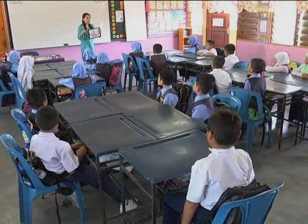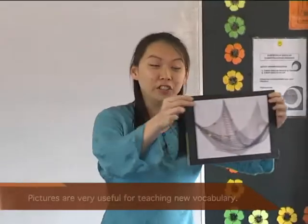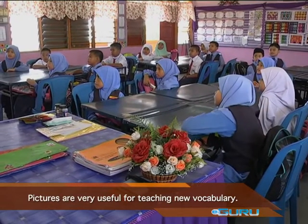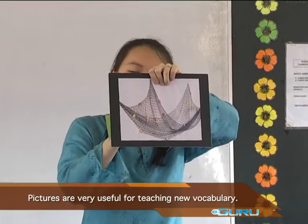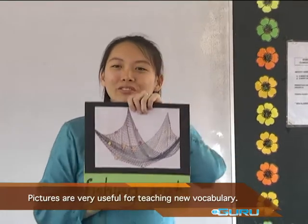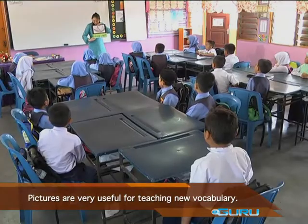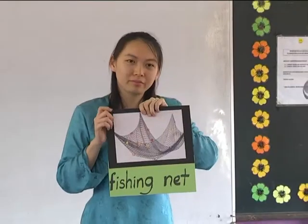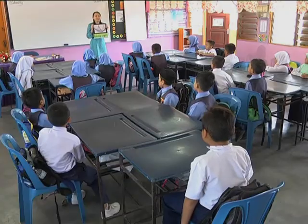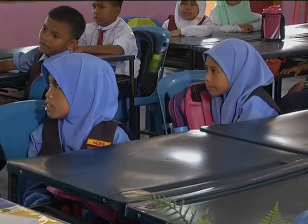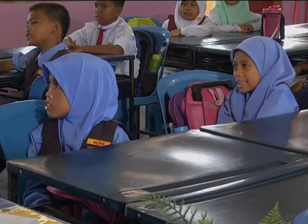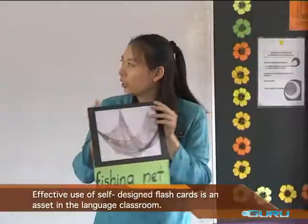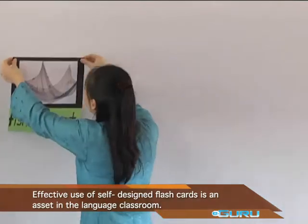I have a picture. What is this? A fishing net. Okay, let's spell fishing net. F-I-S-H-I-N-G-N-E-T. Fishing net. Good. Fishing net.